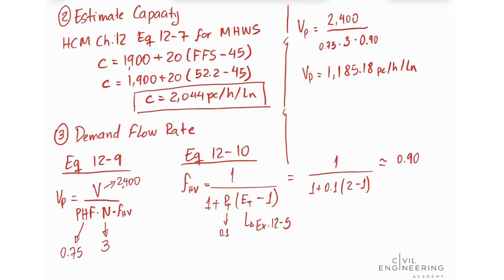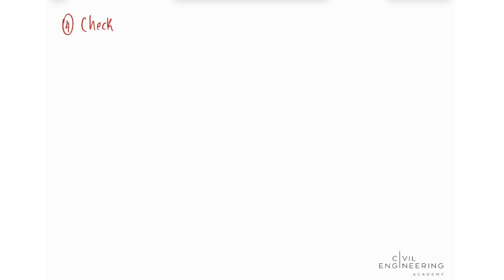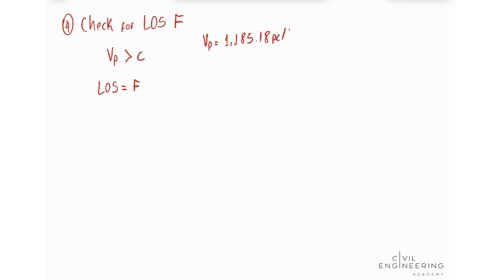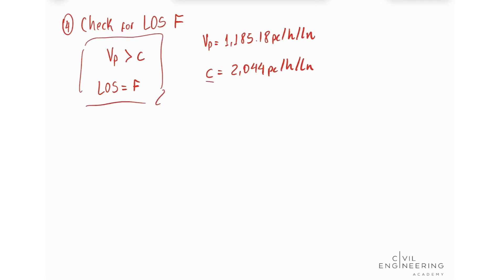Now we move to step four: check for Level of Service F. Whenever our volume flow rate is greater than our capacity, we can automatically conclude that level of service is F. In this case our volume flow rate is 1,185.18 pc/hr/lane and our capacity is 2,044 pc/hr/lane. Since capacity is greater than volume flow rate, we do not have LOS F, so we proceed to step five.